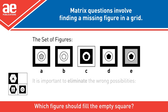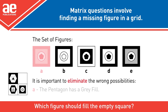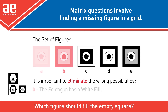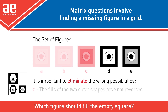Eliminating the wrong possibilities: A — the pentagon has a grey fill. B — the pentagon has a white fill. C — the fills of the two outer shapes have not reversed. E — the fills of the two outer shapes have not reversed.